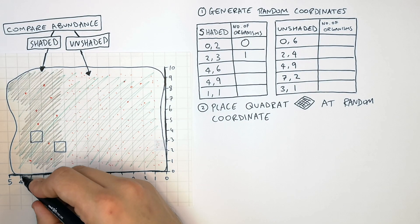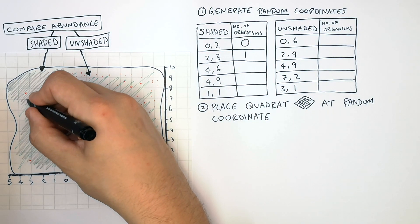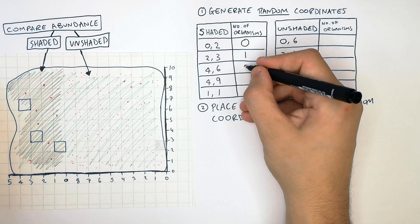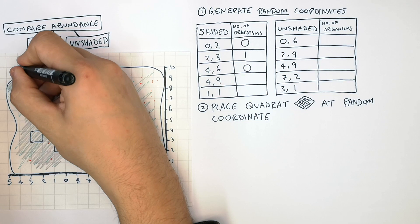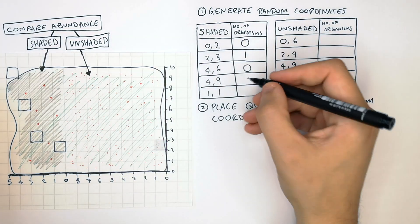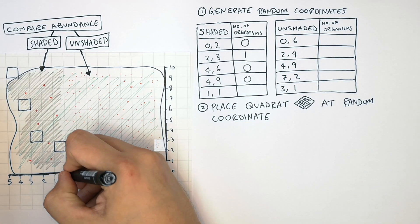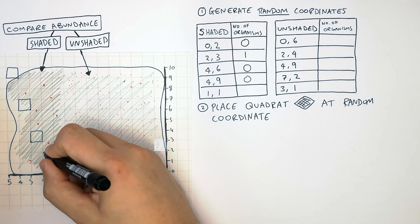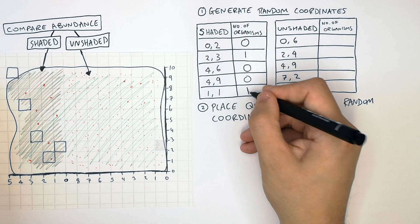Then at coordinate (4, 6) there are 0 plants. At (4, 9) there are also 0 plants. And finally at (1, 1) there is 1 plant in that quadrat.